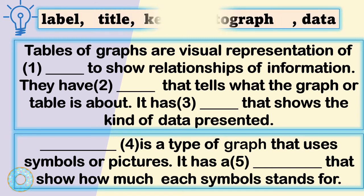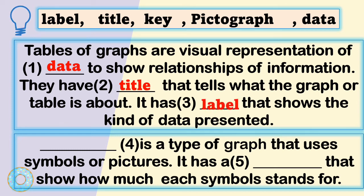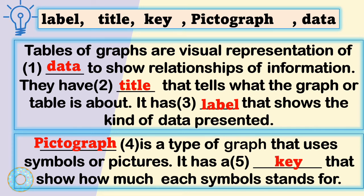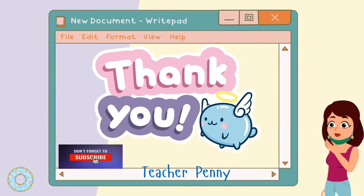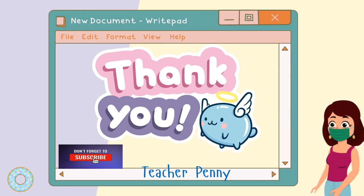Remember the following: tables and graphs are visual representations of data to show the relationships of information. They have a title that tells what the graph or table is about, and a label that shows the kind of data presented. A pictograph is a type of graph that uses symbols or pictures, and it has a key that shows how much each symbol stands for. And that covers our lesson about simple graphs, pictographs, and tables.